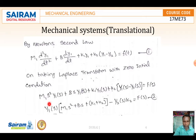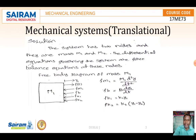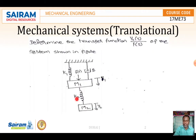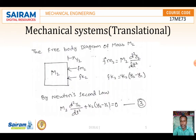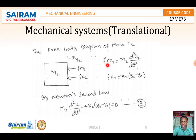We keep this as Equation 1 since we don't yet know Y1 or Y2. Now taking the free body diagram for M2: there is no external force acting on M2. Only the resisting forces M2 and K2 act on it, causing displacement Y2.